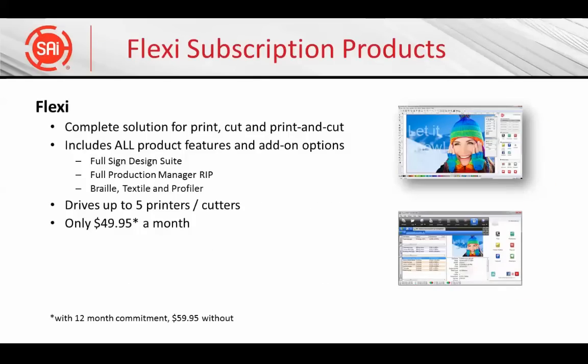We've introduced two products to our subscription line. First, Flexi is based on our full-license FlexiSign Pro product, so you know it's the most complete solution on the market. We've also included add-on features like color profiling, braille, and textile at no additional cost. In North America, Flexi is only $49.95 per month with a one-year commitment. A month-to-month, cancel anytime subscription is only $59.95 a month.